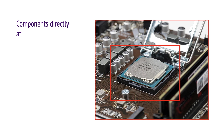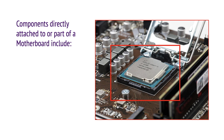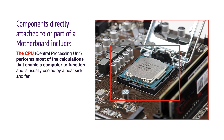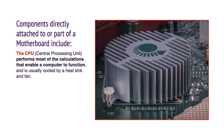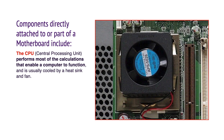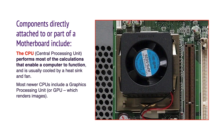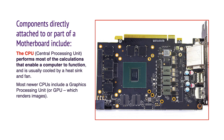Components directly attached to or part of a motherboard include the CPU, otherwise known as a central processing unit. It performs most of the calculations that enable a computer to function and is usually cooled by a heat sink and a fan. Most newer CPUs include a graphics processing unit, otherwise known as a GPU, which renders images.